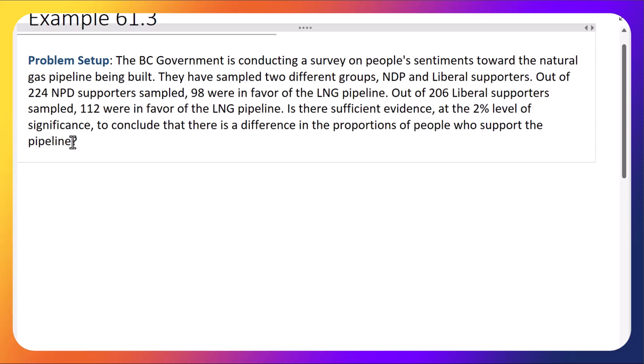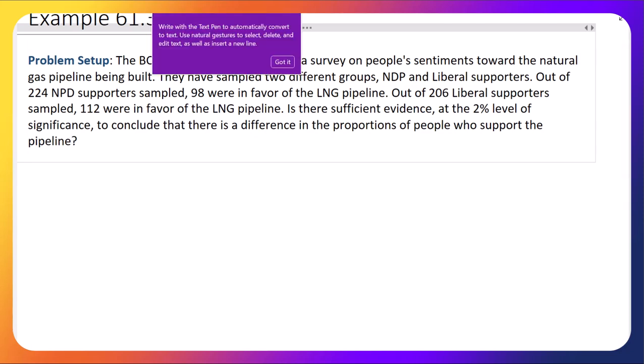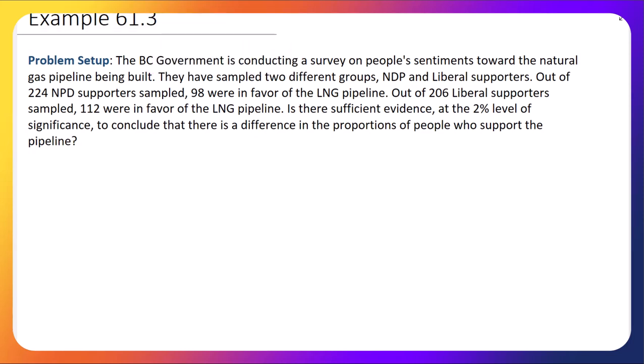This is going to be a hypothesis test we're performing, so let's start by defining our null and alternative hypotheses. The null is going to be that P1 minus P2 equals zero. The alternative will be that P1 minus P2 is not zero. When we're trying to conclude whether or not there is a difference, then we use this not equal to symbol. Now, let's think about what we want P1 and P2 to be. When we have this two-tailed problem, it doesn't actually matter which one we pick as P1 and P2.